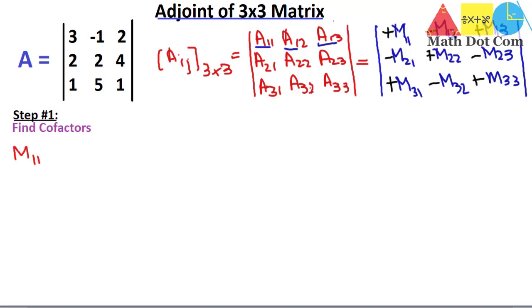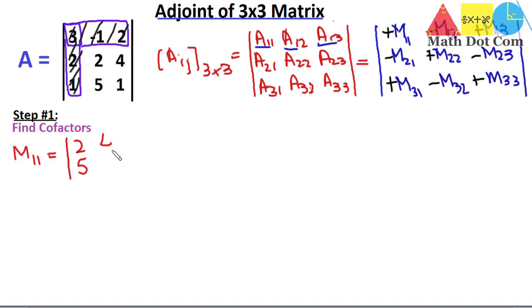M11 is the minor of the element at position (1,1). The minor is the determinant obtained by deleting the row and column in which that element lies. So we delete the row and column of element 3 and take the determinant of the remaining 2×2 elements: 2, 5, 4, and 1. The determinant is 2×1 − 5×4 = 2 − 20 = −18.